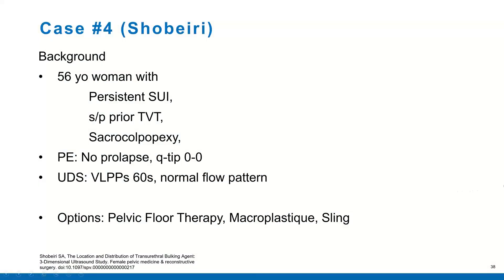This is a 56-year-old woman who has persistent stress incontinence after a prior retropubic synthetic sling. She also had a sacrocopexy at the same time. On examination, she doesn't really have prolapse, and her Q-tip is zero — like many patients with sacrocopexy, she really doesn't have any hypermobility of the urethra. We did go ahead and do a urodynamics test; her leak pressures are about 60, and she does have a normal flow pattern. So Howard, how would you go about this patient?